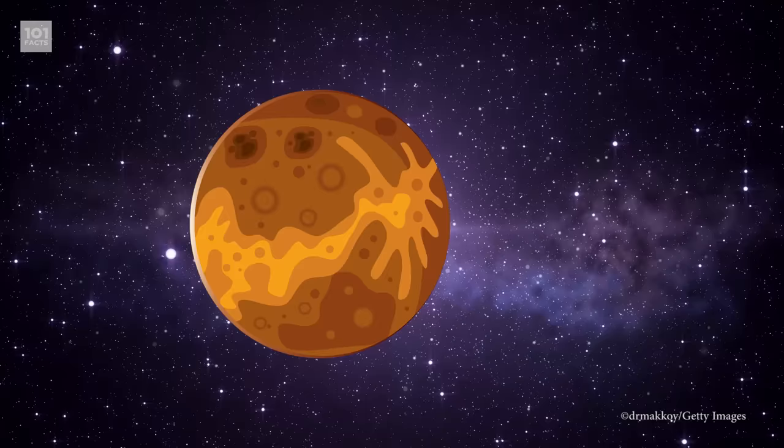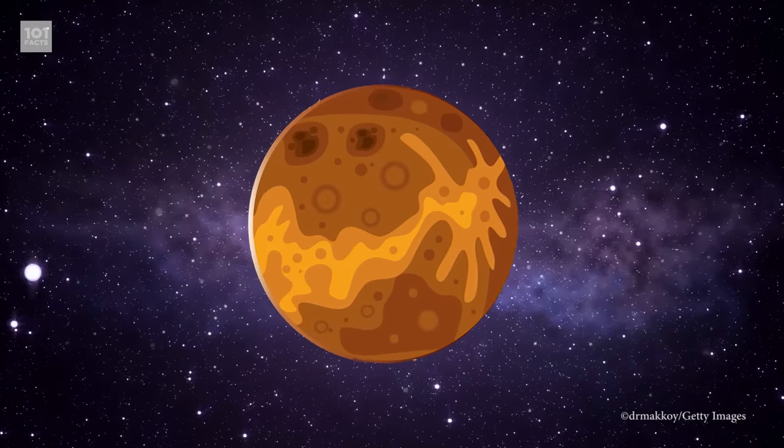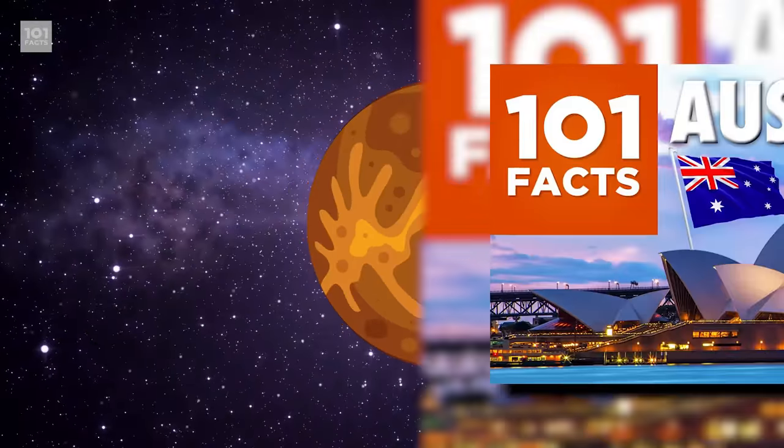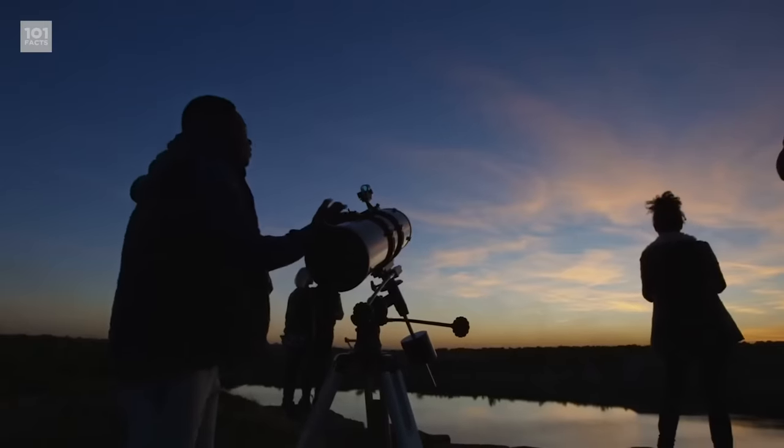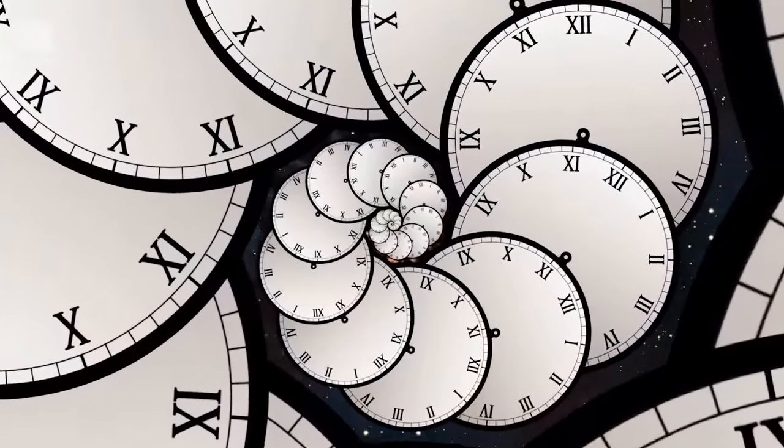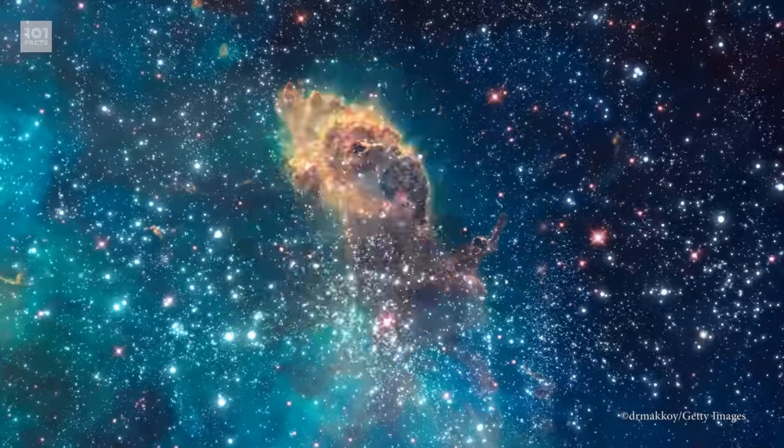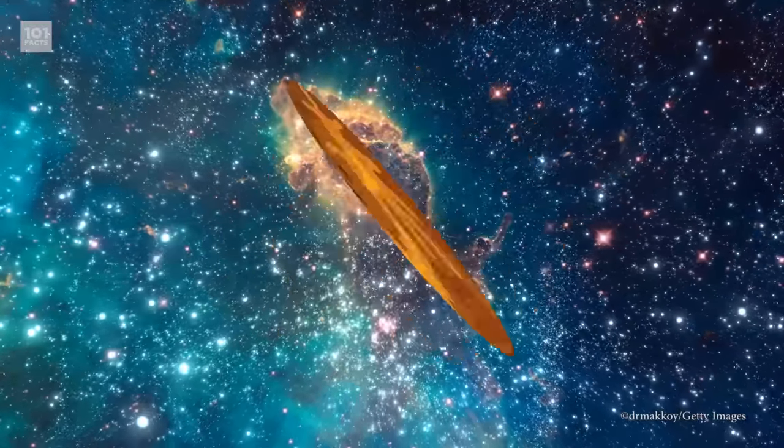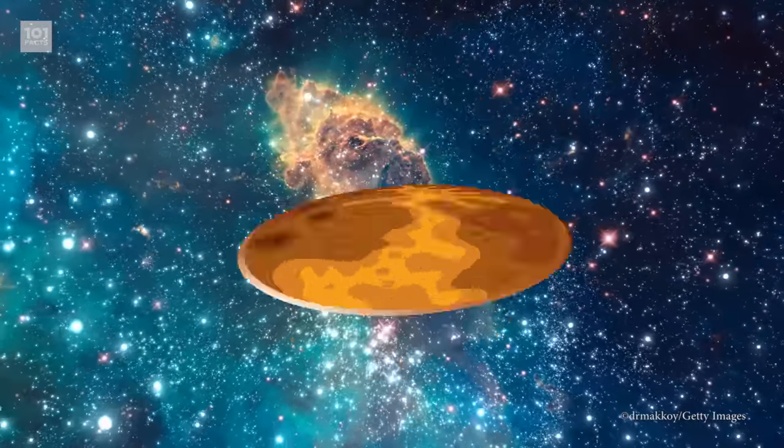There's a good reason Venus spins differently, though. The planet is technically upside down. Not like Australia, no. Astronomers believe that at some point in the solar system's 3.5 billion years, something collided with Venus so hard that it knocked it completely out of its original position and flipped it upside down.